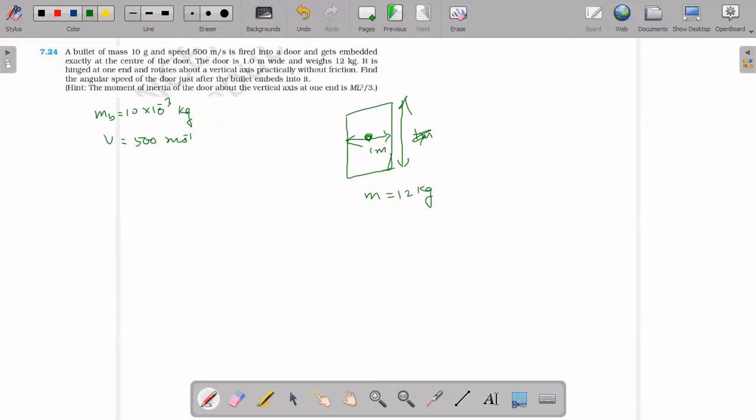The door is hinged at one end and rotates about a vertical axis practically without friction. Find the angular speed of the door just after the bullet embeds.